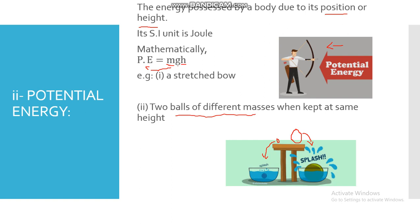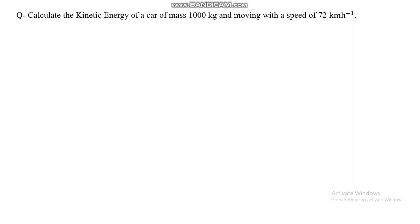Now let's move forward and solve some numerical questions. The first question is: calculate the kinetic energy of a car of mass 1000 kg moving with a speed of 72 km per hour. We have to find kinetic energy because the body is in motion. First we create the data: mass m equals 1000 kg, velocity v equals 72 km per hour. Here you have to be careful about units — kilometer per hour is not the SI unit.